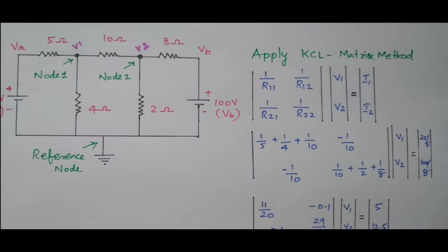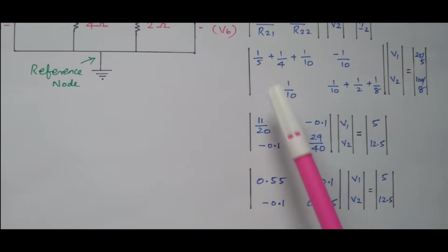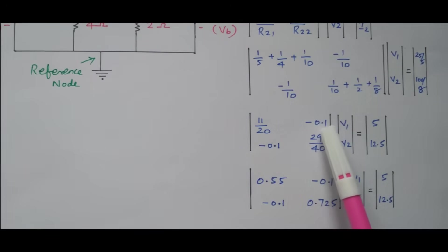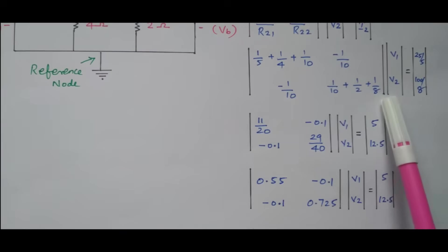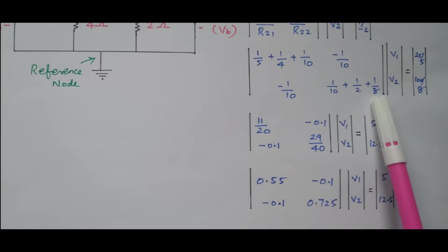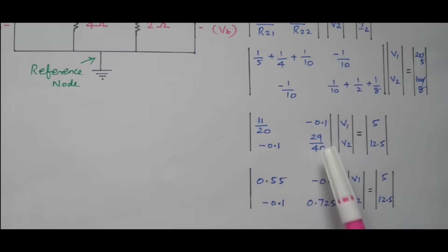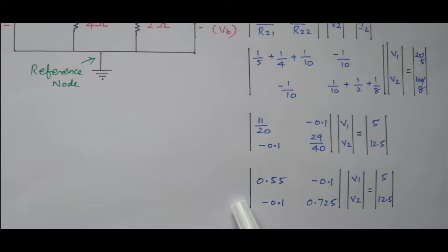Now we simplify. 1/5 plus 1/4 plus 1/10, taking LCM, simplifies to 11/20. Minus 1/10 equals minus 0.1. And 1/10 plus 1/2 plus 1/8 simplifies to 29/40. So the resistance matrix becomes: 0.55 and 0.725 on the diagonal, and minus 0.1 off-diagonal. The current matrix gives 25/5 equals 5, and 100/8 equals 12.5.